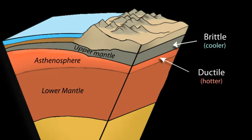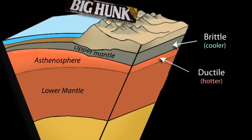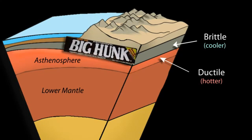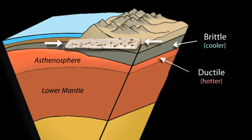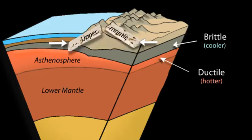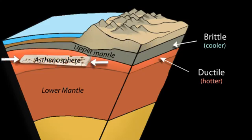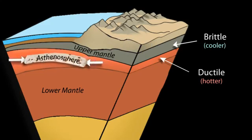As an analogy to how rock can either be brittle or ductile, consider a taffy bar like the Big Hunk. When force is applied, they are brittle when cold and ductile when warm.